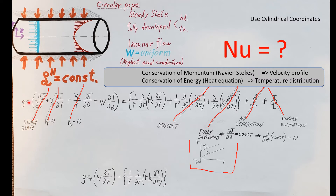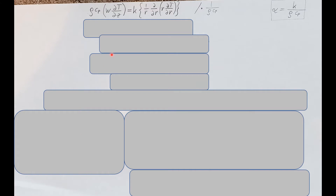So what do we have left? We bring out every term that remains: density, c_p, the convection term in z, and the radial conduction term. That's it — everything else is crossed out. I'll take the density and c_p and multiply them over to the right-hand side. According to this formula, we can combine those three constants into just the thermal diffusivity α, so we only need to deal with one constant instead of three.